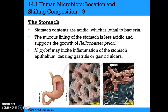In the stomach, the contents are quite acidic, which is usually lethal to bacteria. The mucus lining of the stomach is less acidic, however, and can support growth of certain organisms like Helicobacter pylori, which can incite inflammation and cause gastritis or gastric ulcers. For the longest time, we thought ulcers were caused by other things; now we know it is often an infection, and we can treat it with antibiotics.